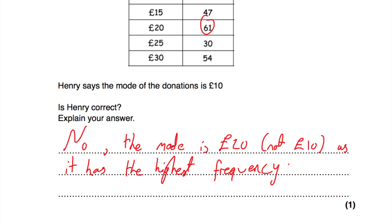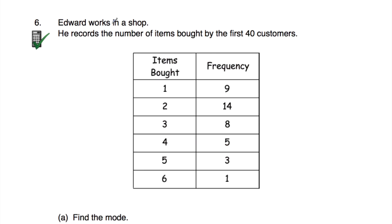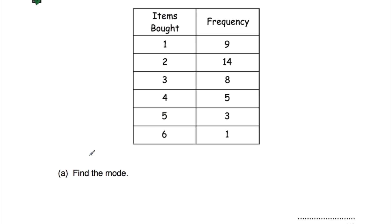Question number six. Edward works in a shop and records the number of items bought by his first 40 customers. Nine customers bought 1 item, 14 bought 2 items, 8 bought 3 items, 5 bought 4 items, 3 bought 5 items, and 1 customer bought 6 items. Part A: find the mode. The highest frequency is 14, which corresponds to 2 items, so the mode is 2.